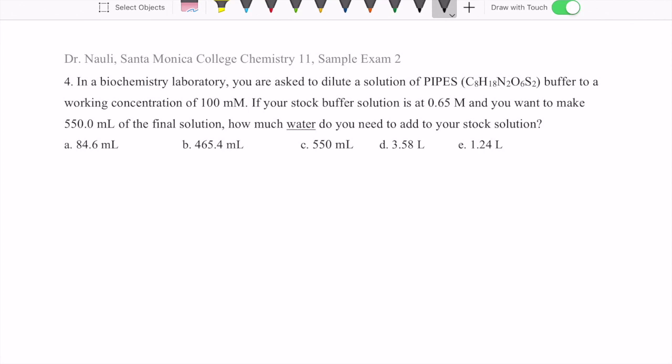This question is about a dilution of a solution of a buffer called PIPES. You're trying to get this to a working concentration of 100 millimolar with the stock initially starting at 0.65 molar.